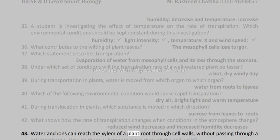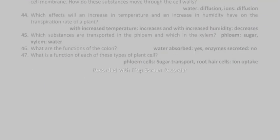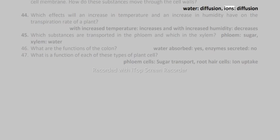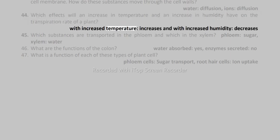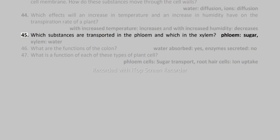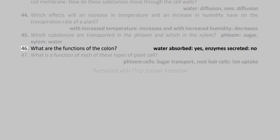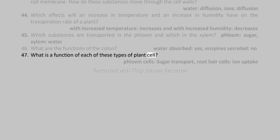44. Which effects will an increase in temperature and an increase in humidity have on the transpiration rate of a plant? With increased temperature: increases; with increased humidity: decreases. 45. Which substances are transported in the phloem and which in the xylem? Phloem: sugar; xylem: water. 46. What are the functions of the colon? Water absorbed: yes; enzyme secreted: no. 47. What is a function of each of these types of plant cell? Phloem cells: sugar transport; root hair cells: ion uptake.